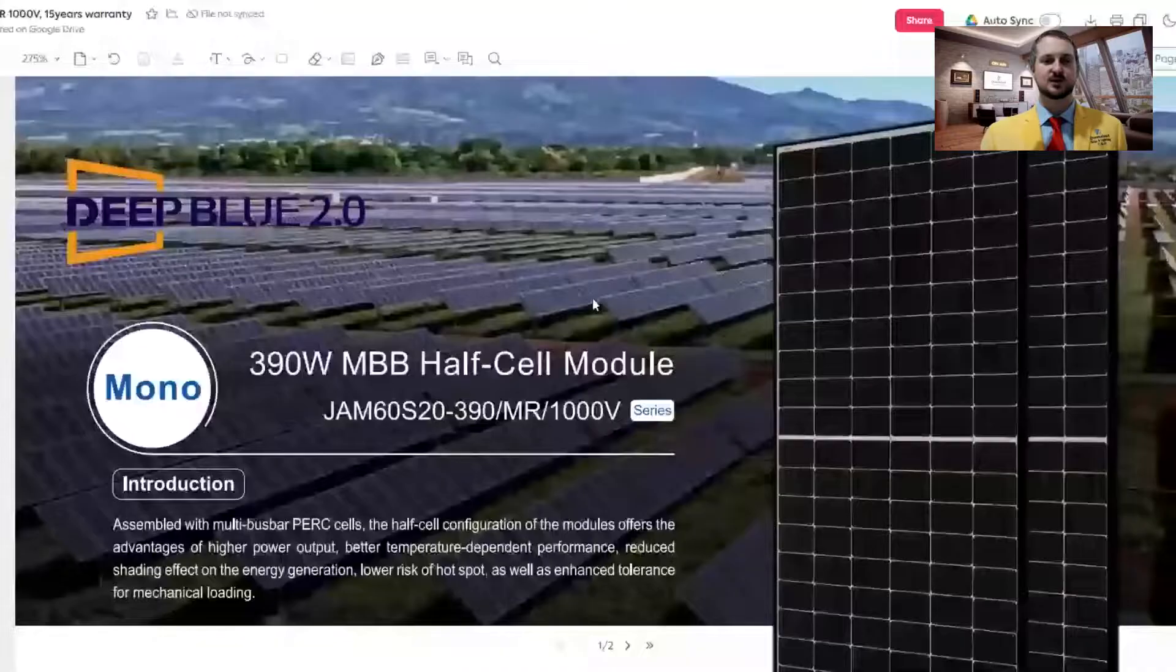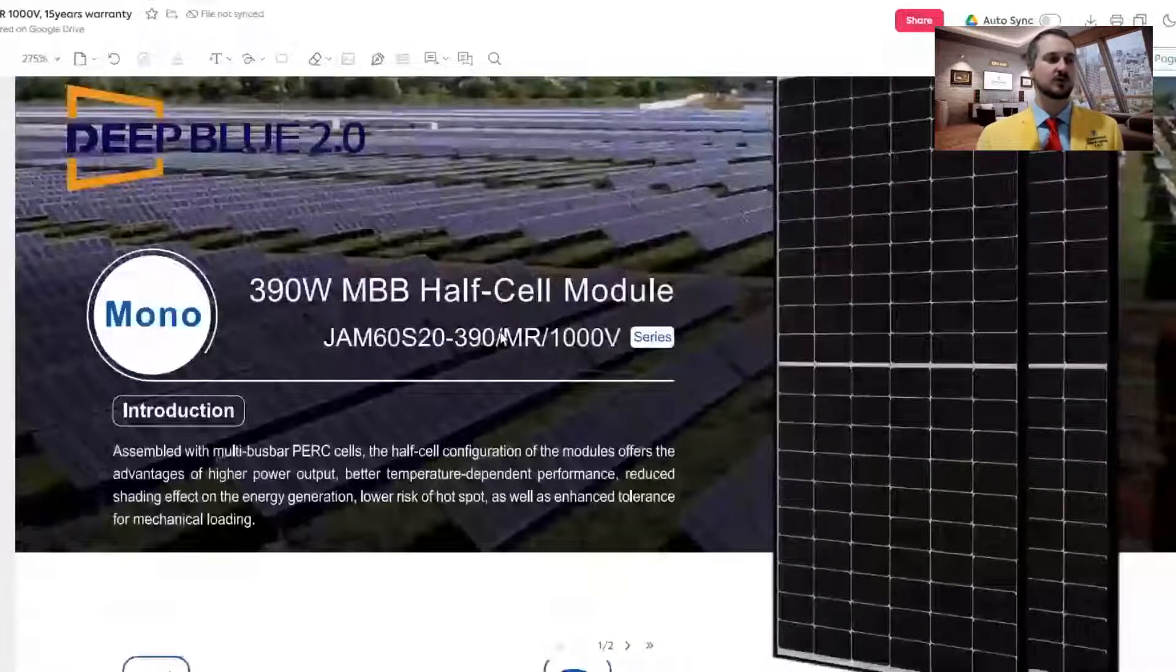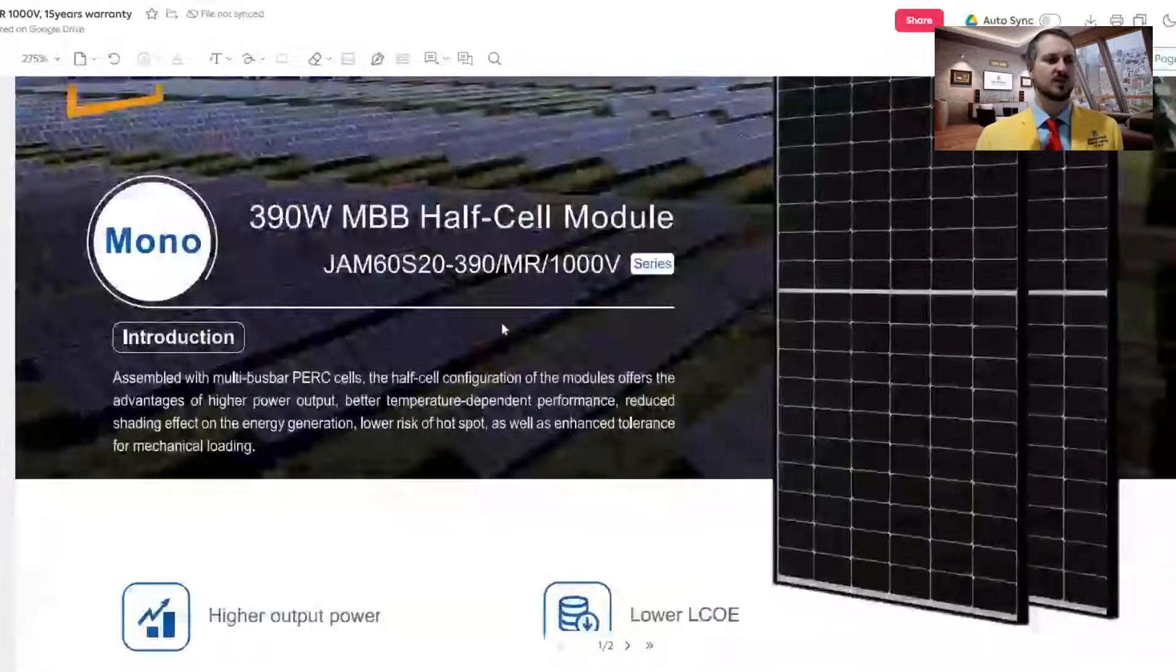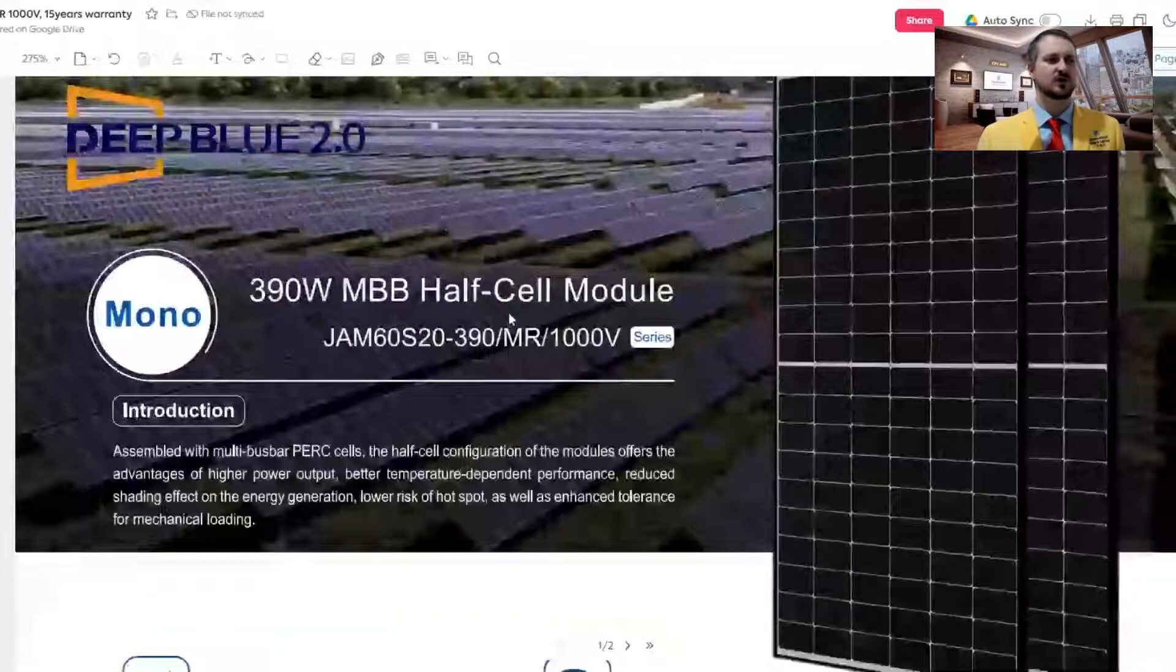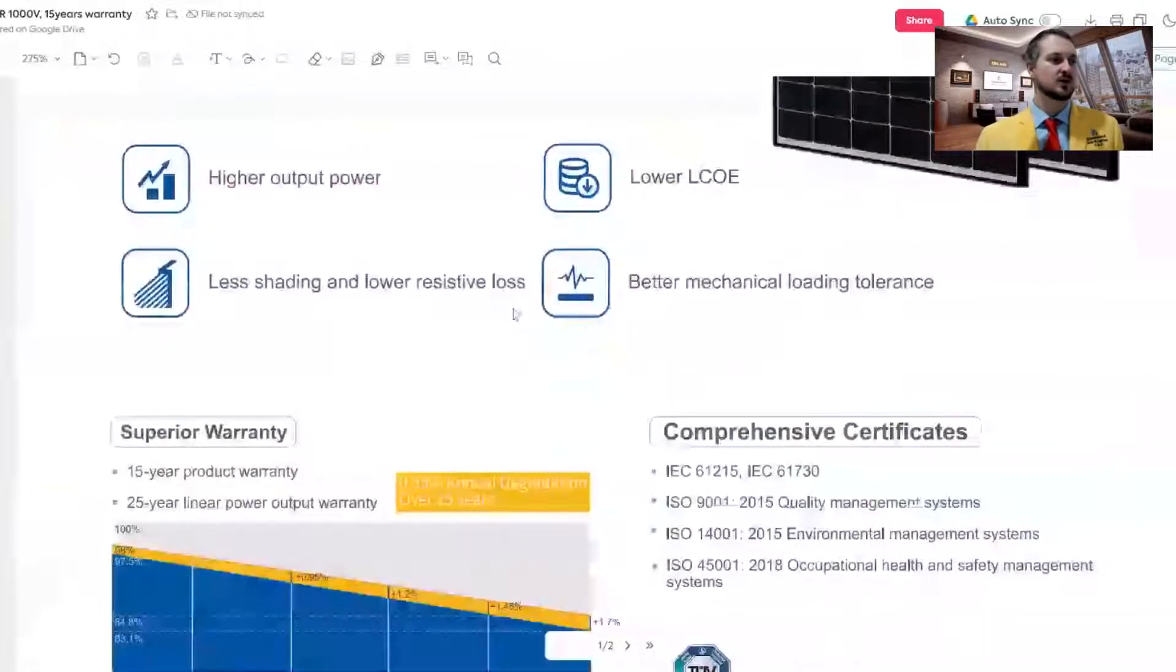So let's have a look at the spec sheet of these things and how they compare. You've got here the Deep Blue 2.0. That's what they're called. They're a 390 watt panel. So this is the one everyone's flogging off. You'll see them in all the budget panels, all the wholesalers trying to get me to buy them. I don't want to go that cheap because I've been called out before. But that's not to say, I have no idea. These could be the best panel going.